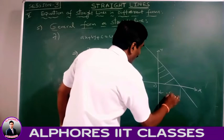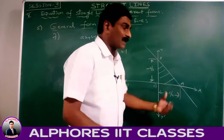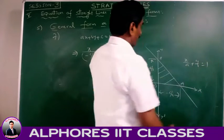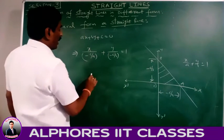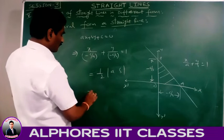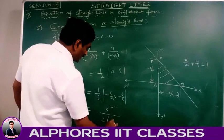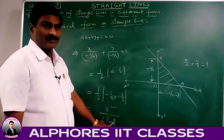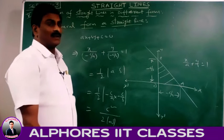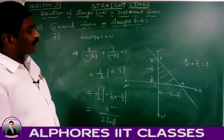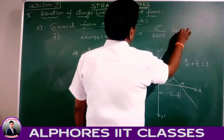If x-intercept a = -c/a and y-intercept b = -c/b, the area of triangle OAB = ½|ab| = ½|(-c/a)·(-c/b)| = ½·c²/|ab| = c²/(2|ab|) square units. Here c² is always positive and ab may be positive or negative, so we use the modulus.